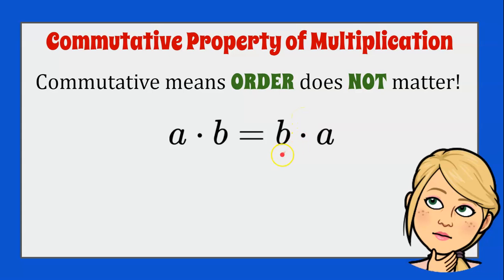Let's put some numbers in. So if we have a represented as 3 and b represented with 4, 3 times 4 is equivalent or the same as 4 times 3. The order does not matter. 3 times 4 is 12, 4 times 3 is 12.